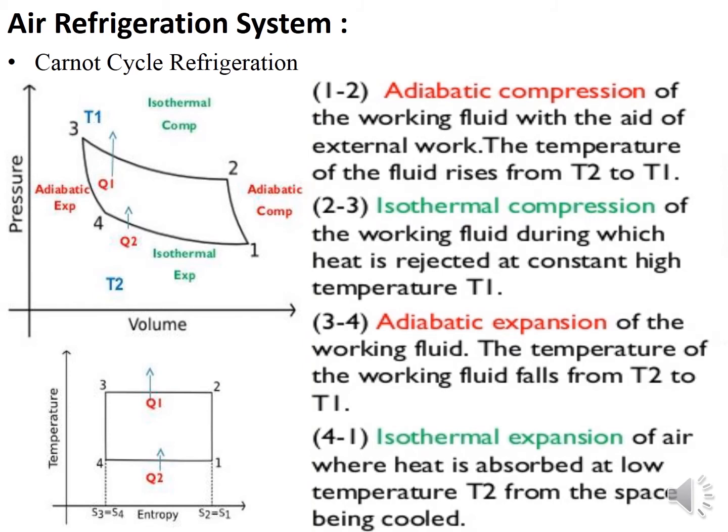Process 1 to 2 is adiabatic compression. 2 to 3 is isothermal compression. 3 to 4 is adiabatic expansion. And 4 to 1 is isothermal expansion. This is the TS diagram, standard square shape. The cycle has 2 adiabatic and 2 isothermal processes.